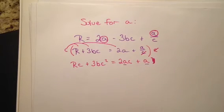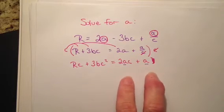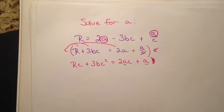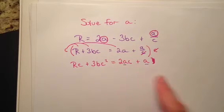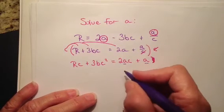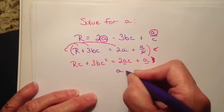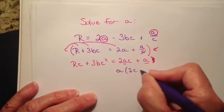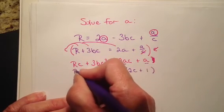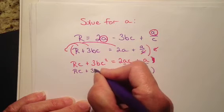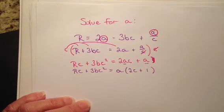Now I've got A's by themselves on one side. So now what I need to do, if I have my variable listed in two places, I want to pull out a greatest common factor of the variable that I'm looking for. So can you see that A is my greatest common factor? So I'm going to take out an A, and I'm left with 2C plus 1. Don't forget that 1 as its placeholder. Equals RC plus 3BC squared. That side didn't change at all.